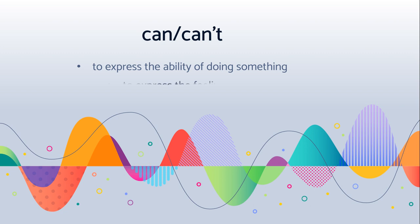And then to express the feelings. For example, you are having love for the cat. So you say, I can touch, I can taste. So you want to express the feelings, you will use can or can't. And for to request or offer, you want to ask someone, you want this or not. So you will use can or can't.